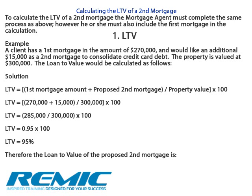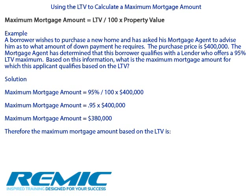To calculate the Loan-to-Value of a second mortgage, the mortgage agent must complete the same process; however, he or she must include the First Mortgage in the calculation. A client has a First Mortgage in the amount of $270,000, and he or she would like an additional $15,000 as a second mortgage in order to consolidate credit card debt. The property is already valued at $300,000. The Loan-to-Value equals the First Mortgage Amount plus the Proposed Second Mortgage Amount divided by the Property Value, then multiplied by 100. Therefore it would be $270,000 plus $15,000 divided by $300,000 multiplied by 100, which equals $285,000 divided by $300,000 multiplied by 100, equating to 0.95 times 100, leaving us at a proposed Loan-to-Value of 95%.